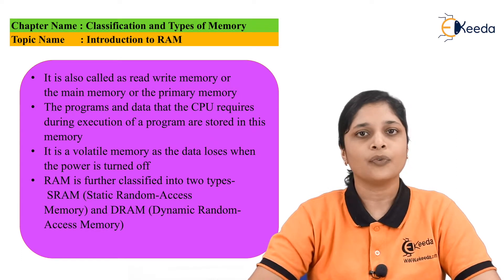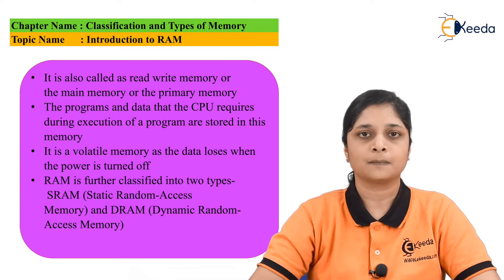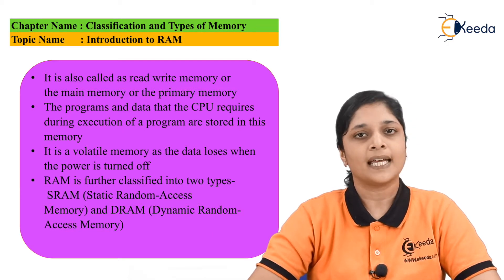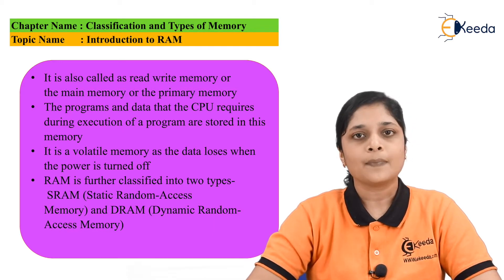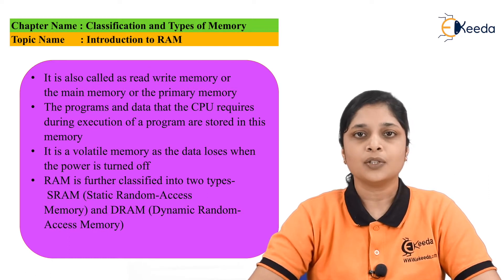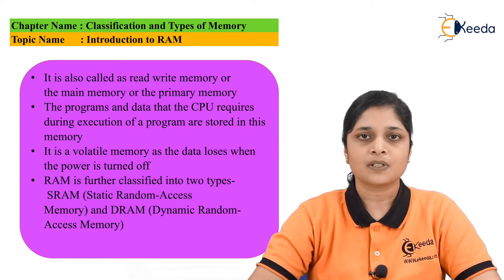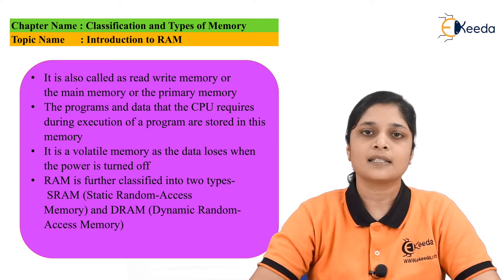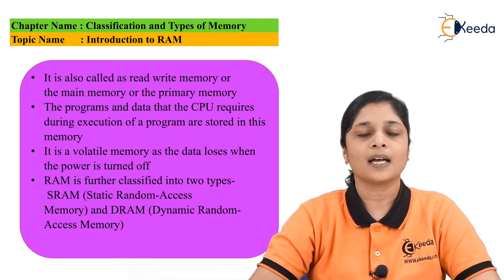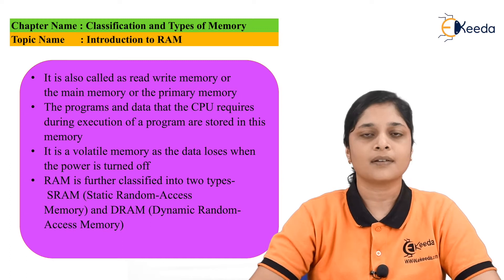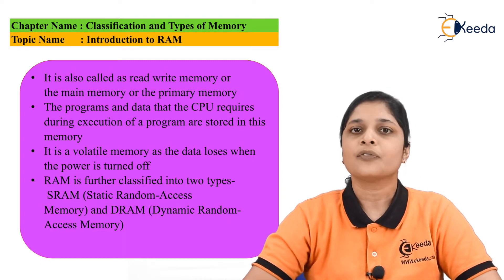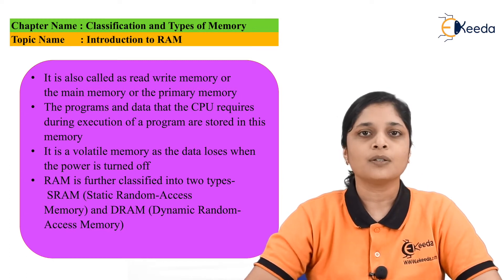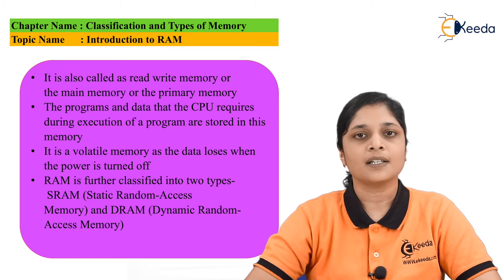RAM is a volatile memory, meaning the data is lost when you switch off the power — hence it is called volatile memory. RAM is generally classified into two types: static RAM and dynamic RAM.